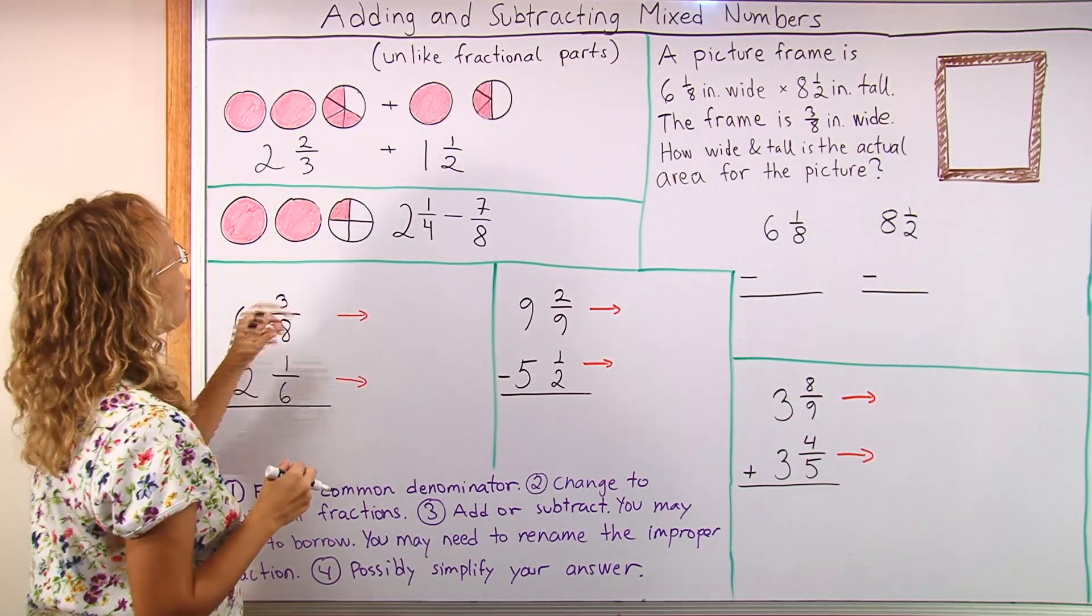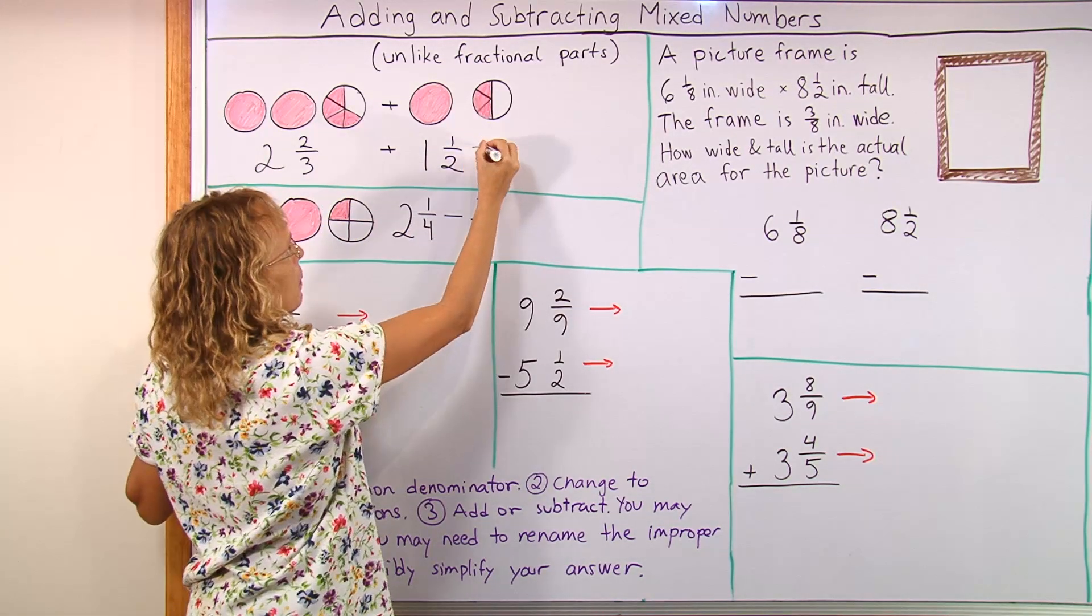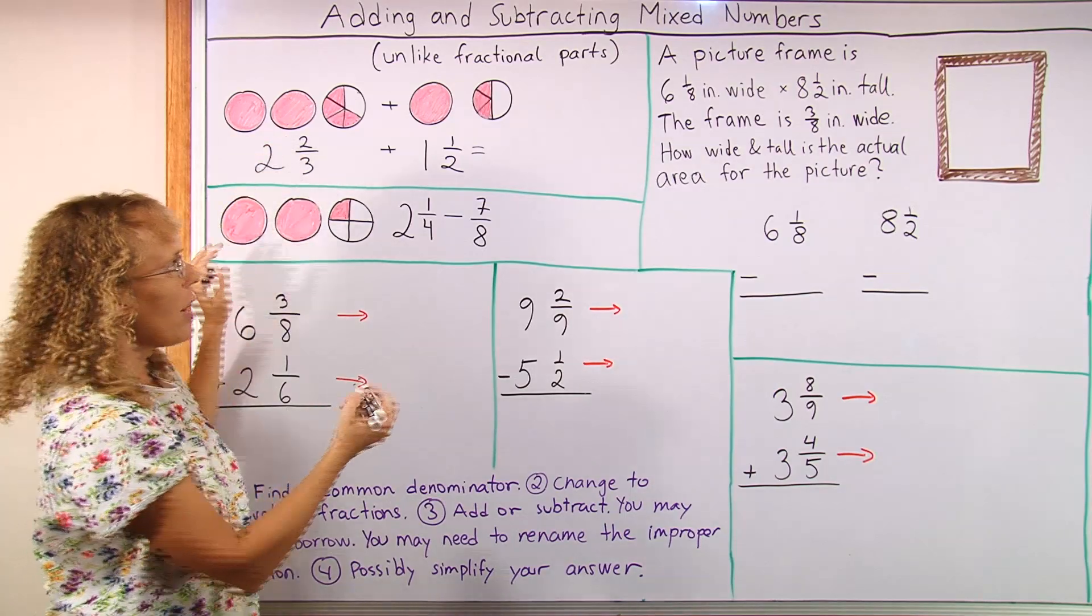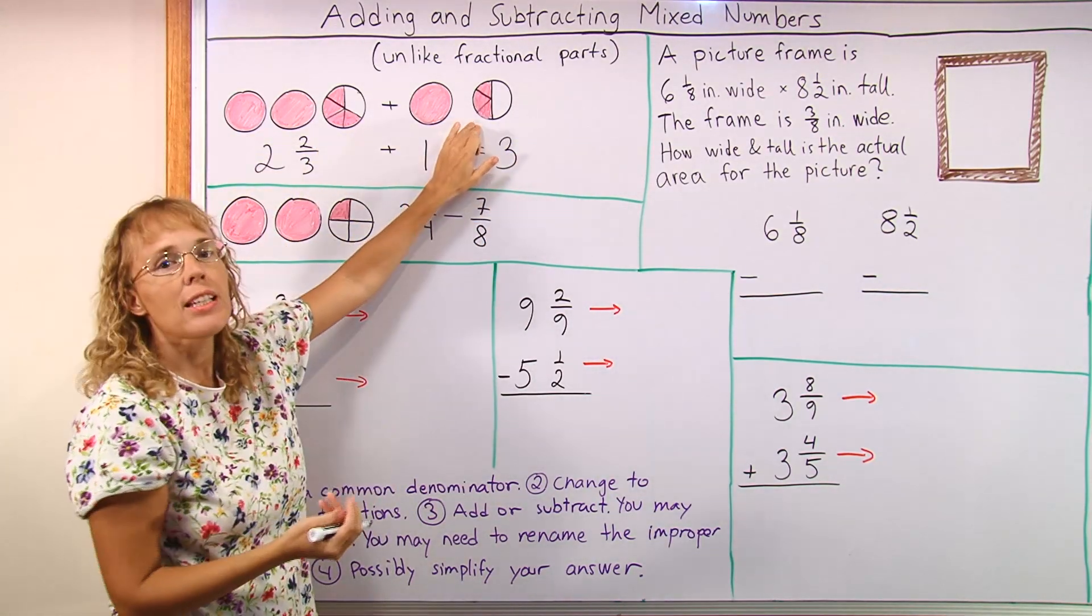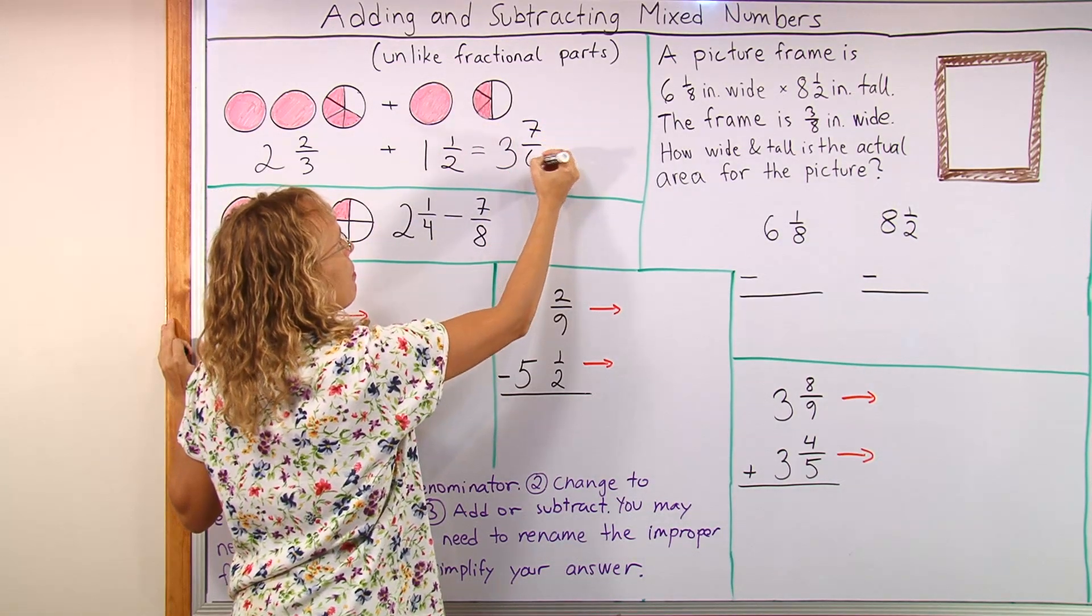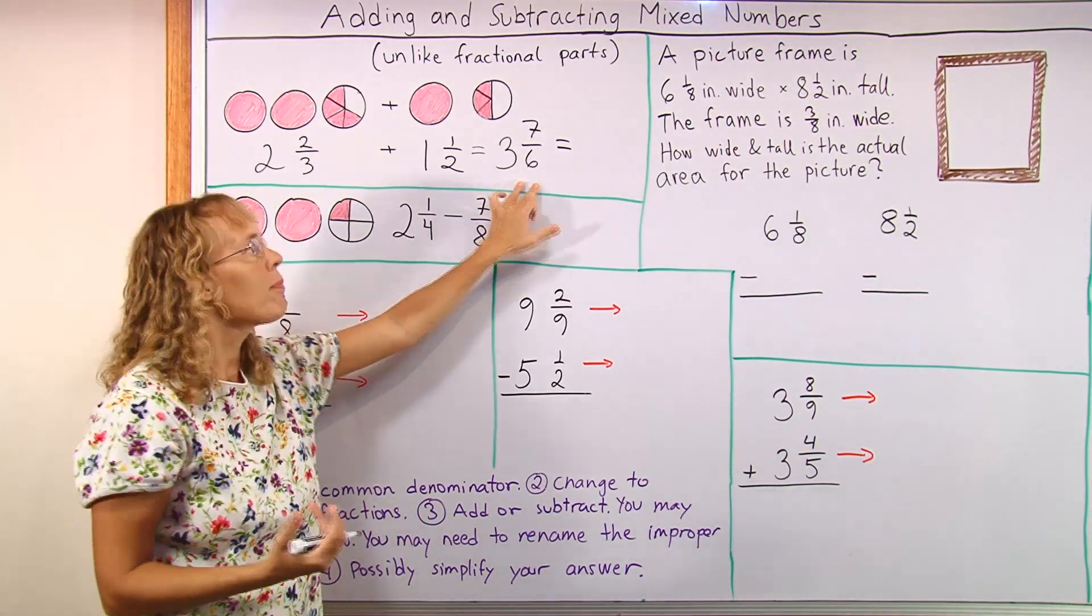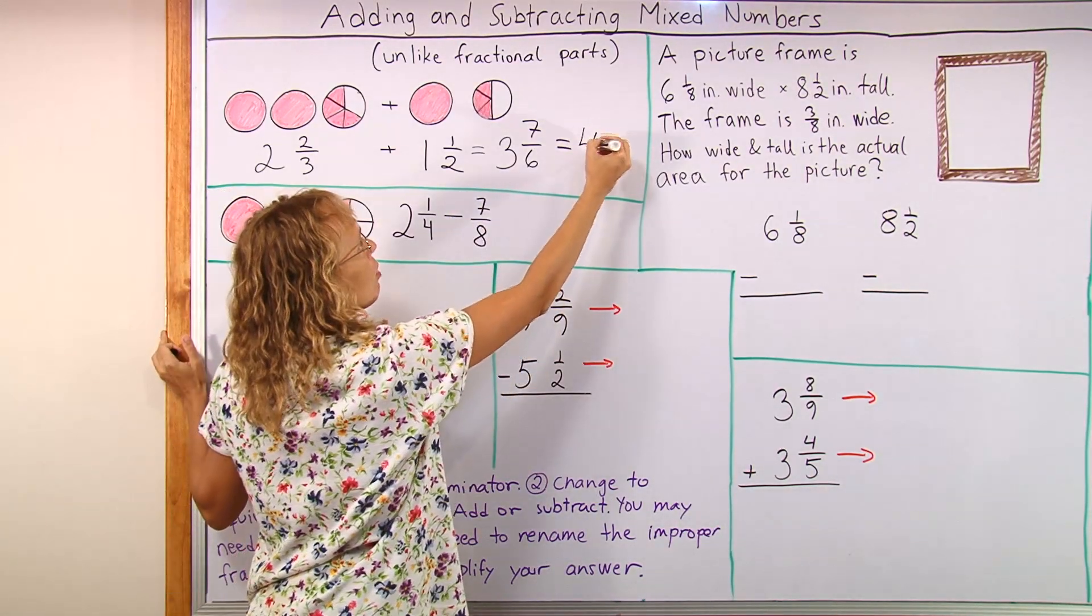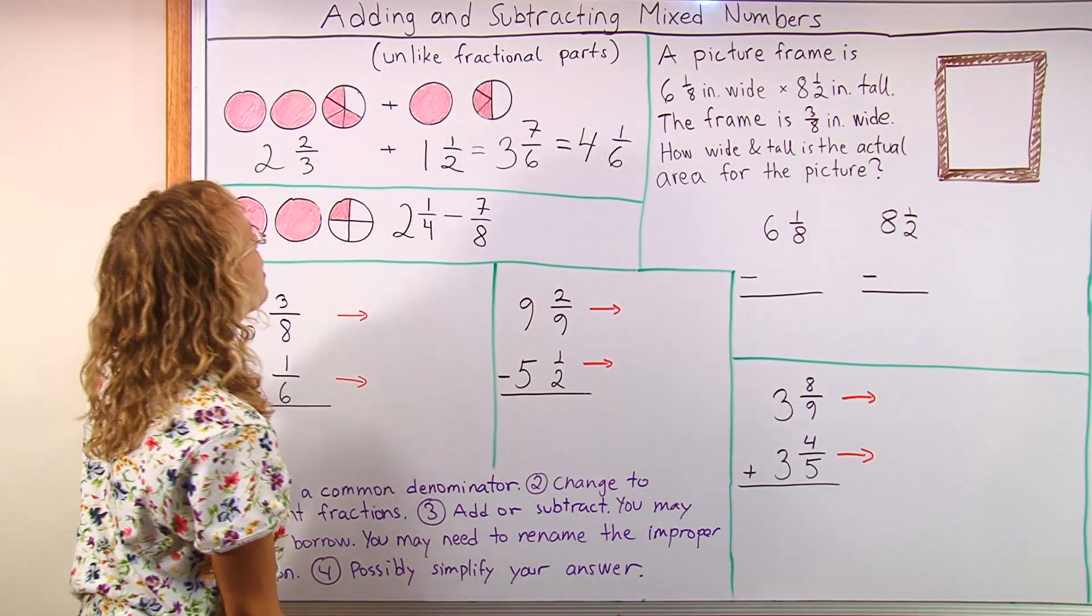Okay, now we can add the fractional parts and we would get... Let me add here the whole pies. 3 whole pies. And then we have 4 and 3 sixths, which is 7 sixths. And now from the 7 sixths we get one more whole pie. So we actually have 4 whole pies and then just 1 sixth left over.